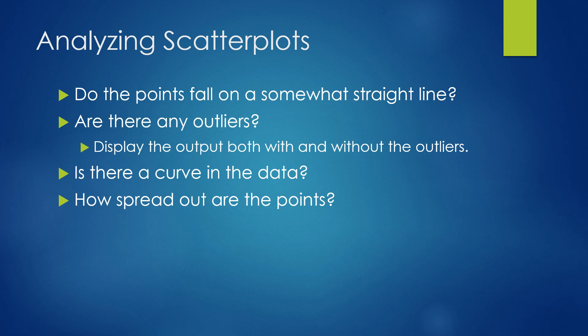Analyzing scatter plots involves looking at the points to see if they fall in a somewhat straight line. Are there any outliers? Values pulled far away from the other variables. Is there a curve in the data? This would lead us to another type of analysis. And how spread out are the points? If they're very far apart, you'll probably have no slope, which means no relationship.